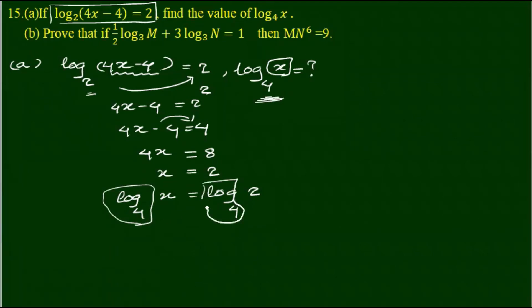The next step is x is equal to 2. So if we see the next step, we are providing x. To work the second step, the second step result is 2.